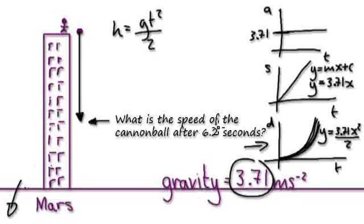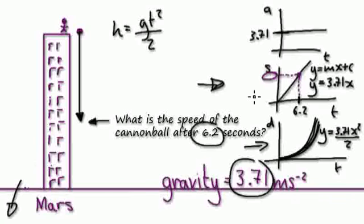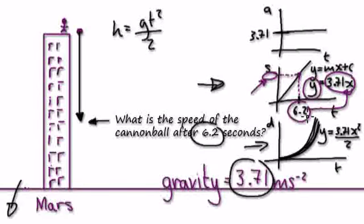But we don't actually need the distance-time graph. We only care about the speed of the ball after 6.2 seconds, so we need the speed-time graph. At t equals 6.2, it's a straight reading — go up and then across. Use the equation, put 6.2 into x, and that will tell you the y. So to answer this question, it's 6.2 times 3.71.